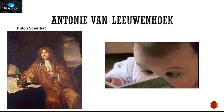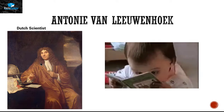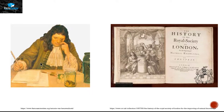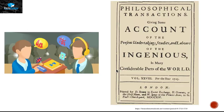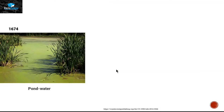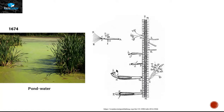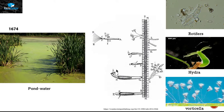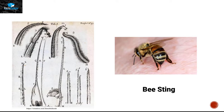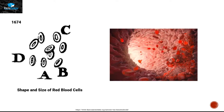Leeuwenhoek started making observations of what he saw under his own microscope and then started writing letters to the Royal Society of London. His letters were in Dutch, so they were translated and republished in the Philosophical Transactions. His first observation was in 1674 of pond water, and he made diagrams showing rotifers, hydra, and vorticella — organisms we now know as protists. He also replicated some of Robert Hooke's work like bee sting observations.